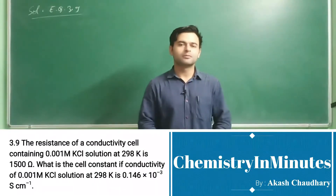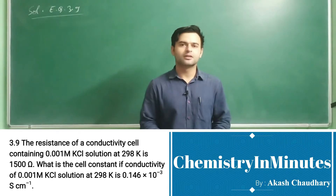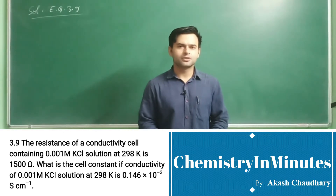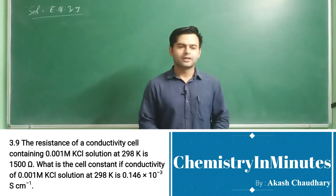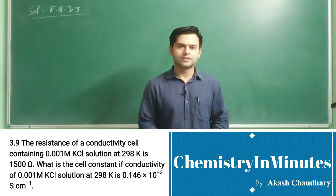Hello my dear students. Welcome to Chemistry in Minutes. The question now appearing on your screen is exercise question 3.9. The question is: the resistance of a conductivity cell containing 0.001M KCL solution at 298 Kelvin is 1500 Ohm. What is the cell constant if the conductivity of 0.001M KCL solution at 298 Kelvin is 0.146 × 10⁻³ Siemens per centimeter?